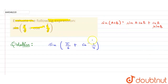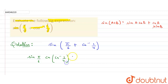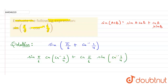Now let's apply this formula. Here a is pi by six and b is cos inverse of one upon four. So we get: sine(pi/6) · cos(cos⁻¹(1/4)) + cos(pi/6) · sine(cos⁻¹(1/4)).